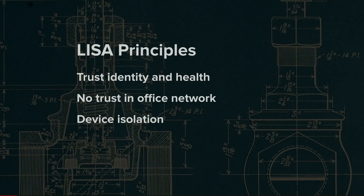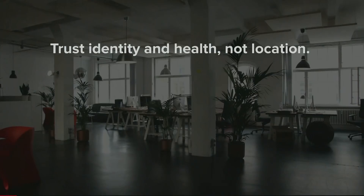Then deprovision your office network — basically remove any special access it has. Treat it like any other network out there in the world. When you're on that network, all you get is Internet access and access to the VPN. You'll also put in place device and network isolation so that devices on the local network cannot talk to each other, and networks cannot talk to each other. That helps limit the blast radius of compromised devices.